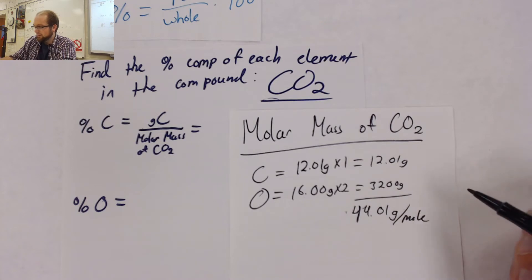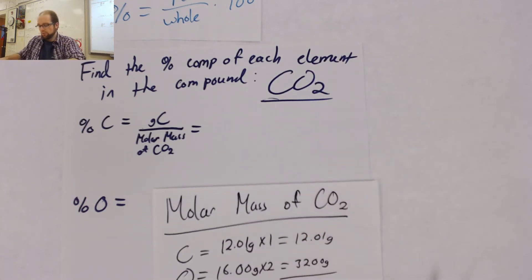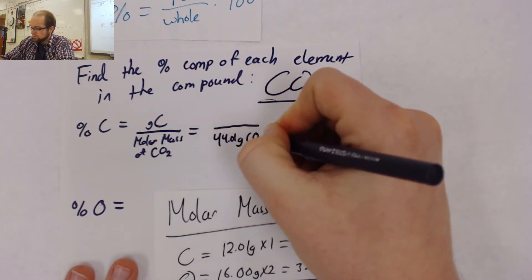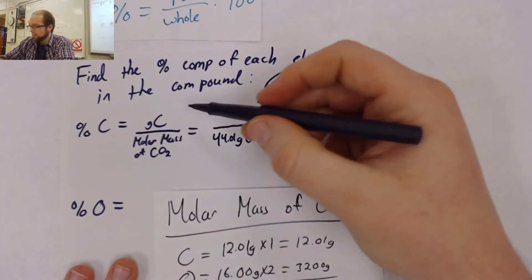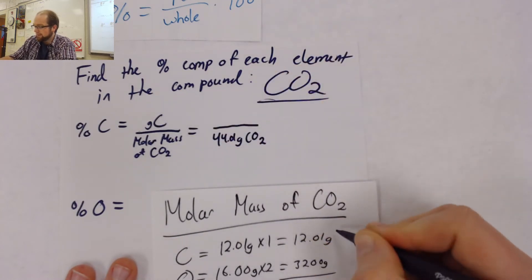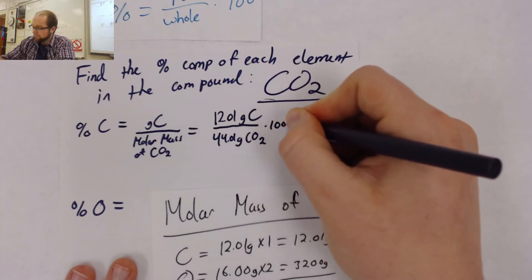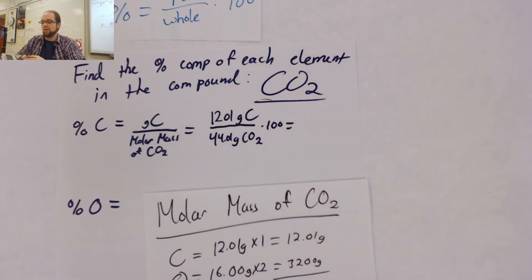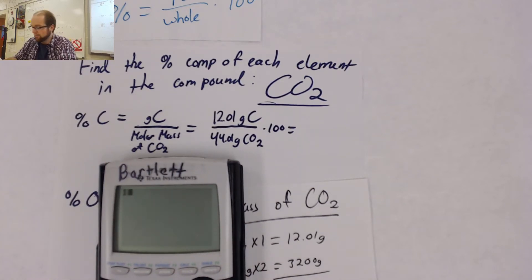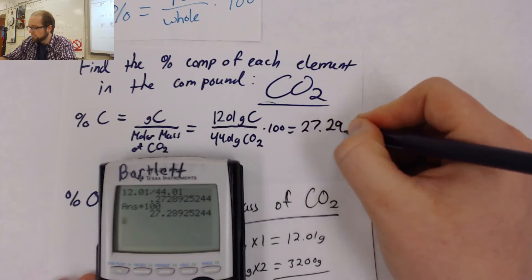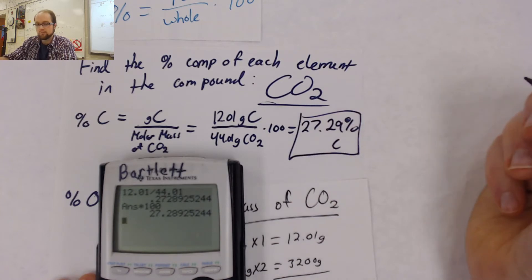This gets plugged in as the bottom part of my fraction. This is the whole that we're dividing by of CO2. Now we need to include the grams of our carbon, which we already found. The breakdown of the CO2 molecule was that 12.01 grams were from carbon. If I just plug this into my calculator, I can very easily find my percent for carbon. 12.01 divided by 44.01 and then multiply by 100, keeping these four sig figs, I would see this as an answer of 27.29% carbon.